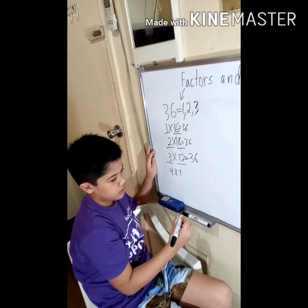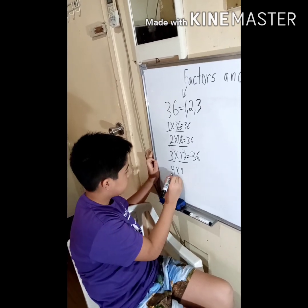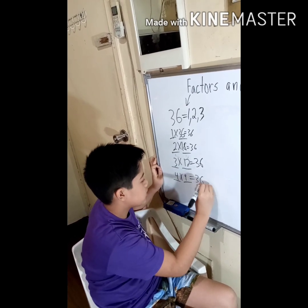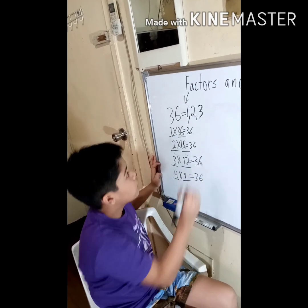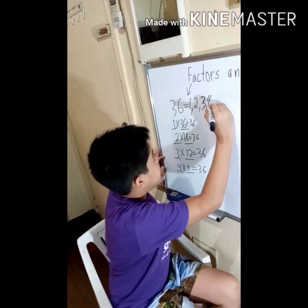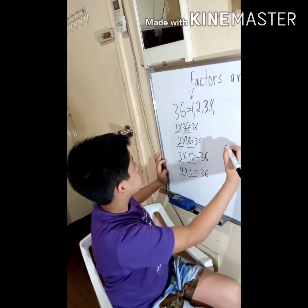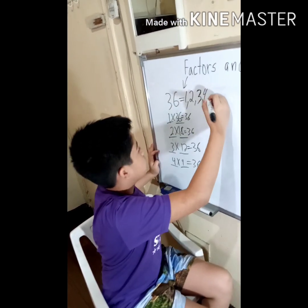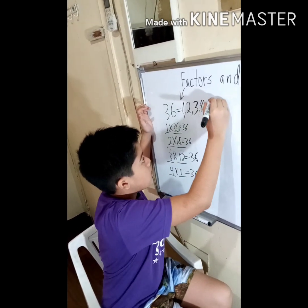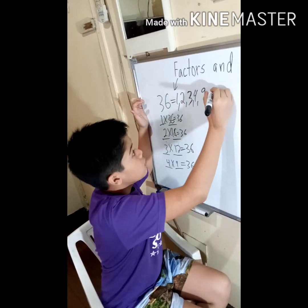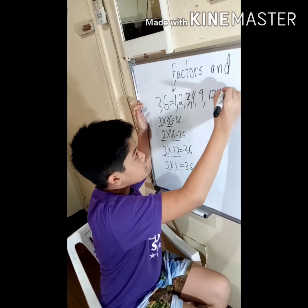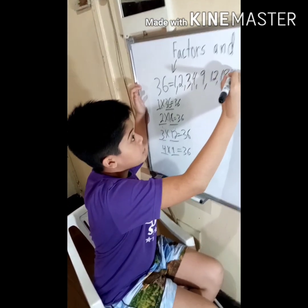Four times 9 equals 36, so 4 and 9 are also factors of 36. The factors of 36 are 1, 2, 3, 4, 9, 12, 18, and 36. That's a lot of factors.